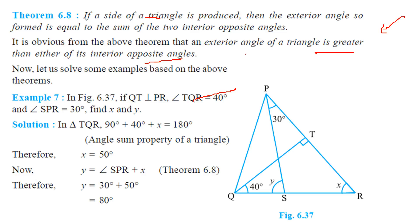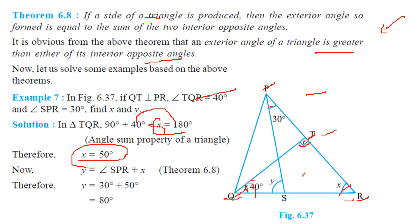The exterior angle of a triangle is always greater than either of its interior opposite angles. In this figure, QT is perpendicular to PR, angle TQR is given as 40 degrees, and angle SPR is given as 30 degrees. We have to find x and y. Taking triangle TQR first: 90 plus x plus 40 equals 180 degrees, so x equals 180 minus 130, which gives x equals 50 degrees.